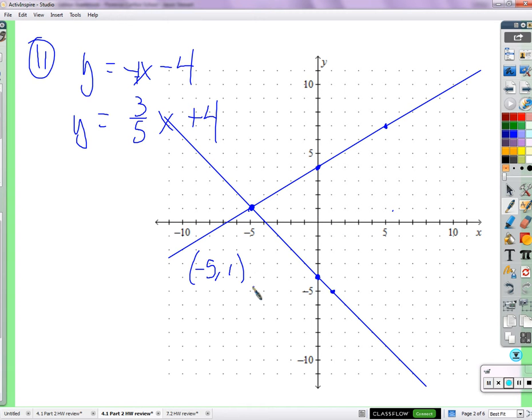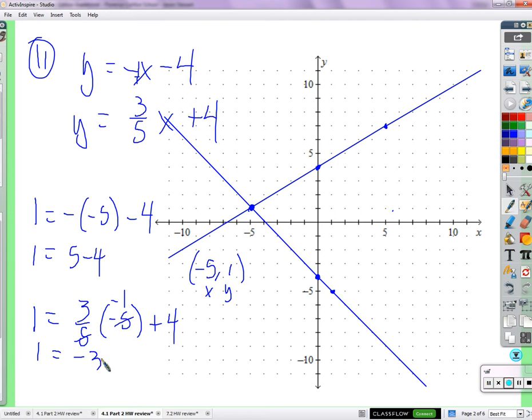So what can we do to make sure that this is correct? Plug it in. This is x and this is y, right? The solution means an x and a y that works in both equations. So a y of one, and this is negative five. Y equals five minus four. And five minus four is what? That's correct. One equals three-fifths times negative five plus four. Negative three plus four is one. That's correct.